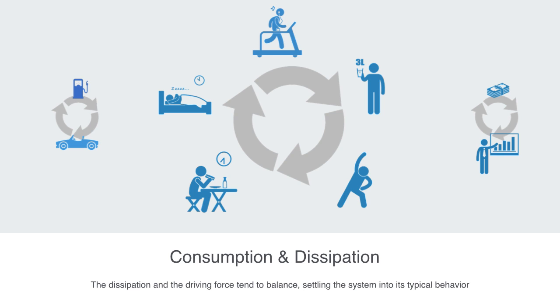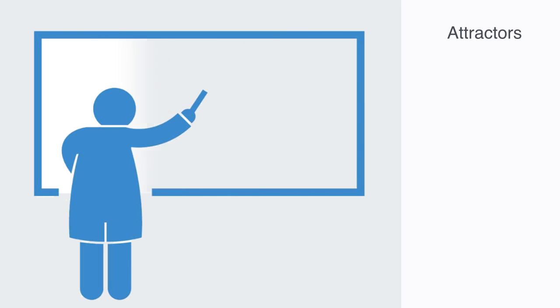This typical set of states the system follows around its point of equilibrium is called an attractor. In the field of dynamical systems, an attractor is a set of values or states towards which a system tends to evolve for a wide variety of starting conditions to the system. System values that get close enough to the attractor remain close even if slightly perturbed. There are many examples of attractors.